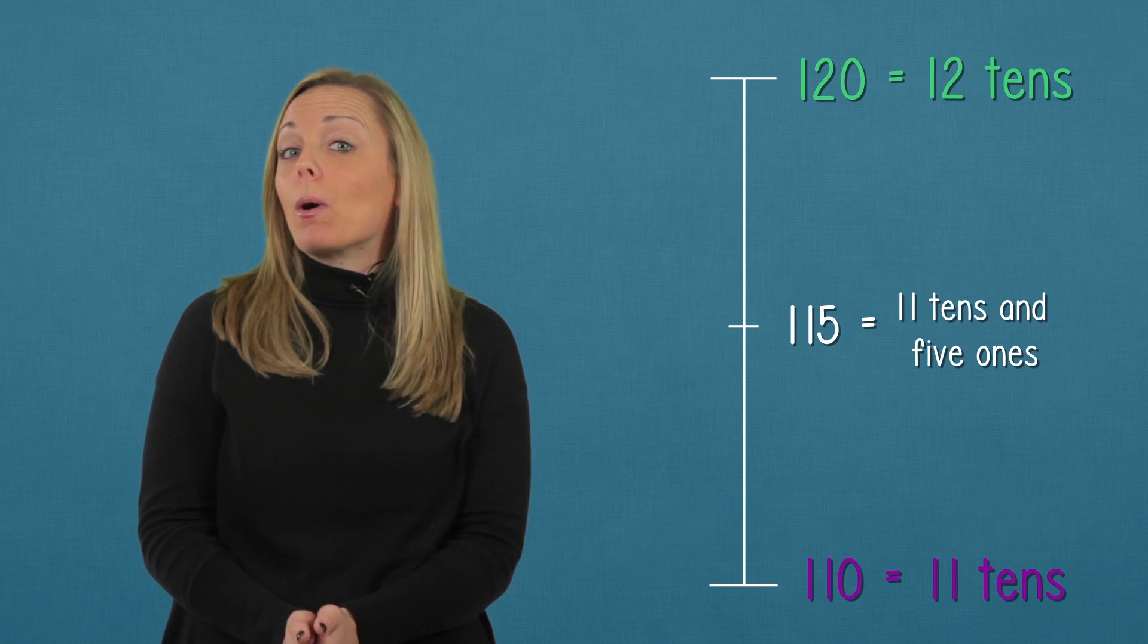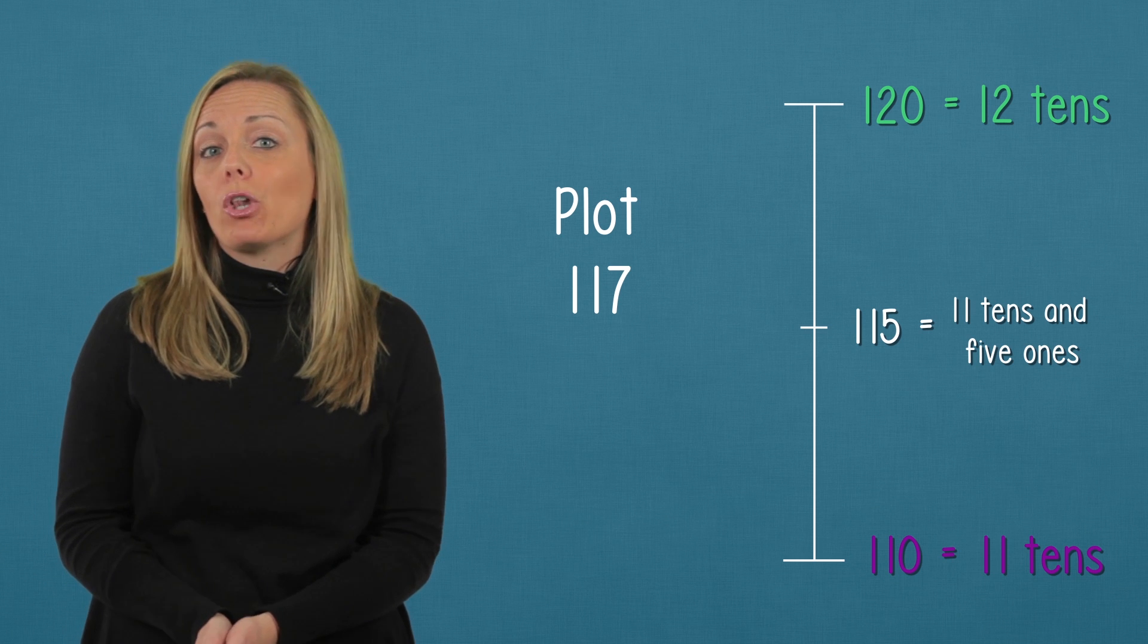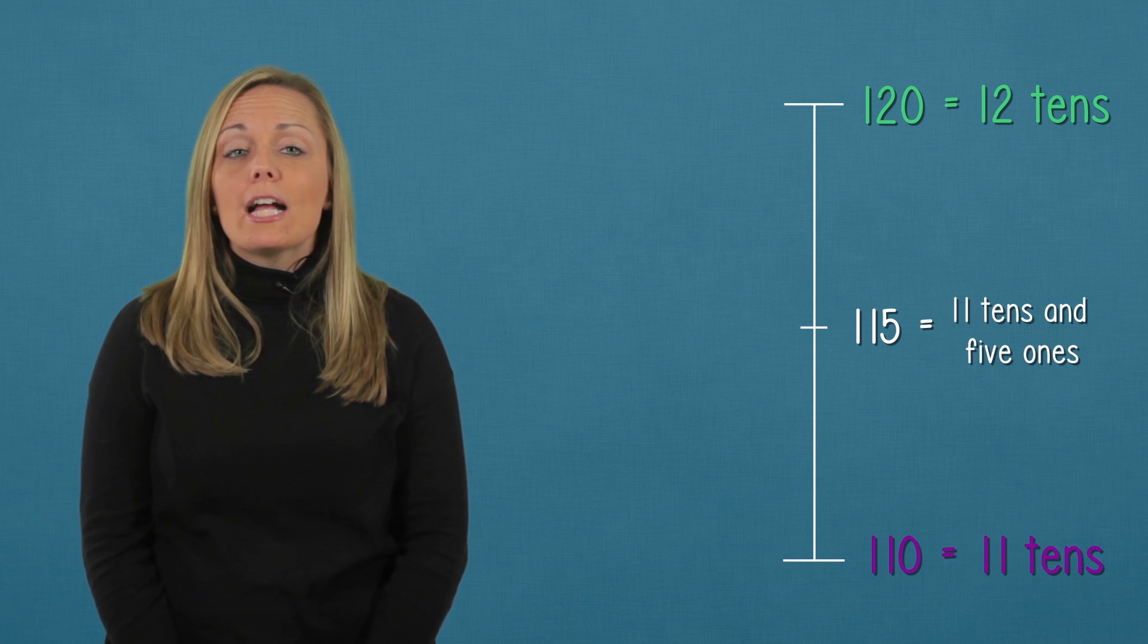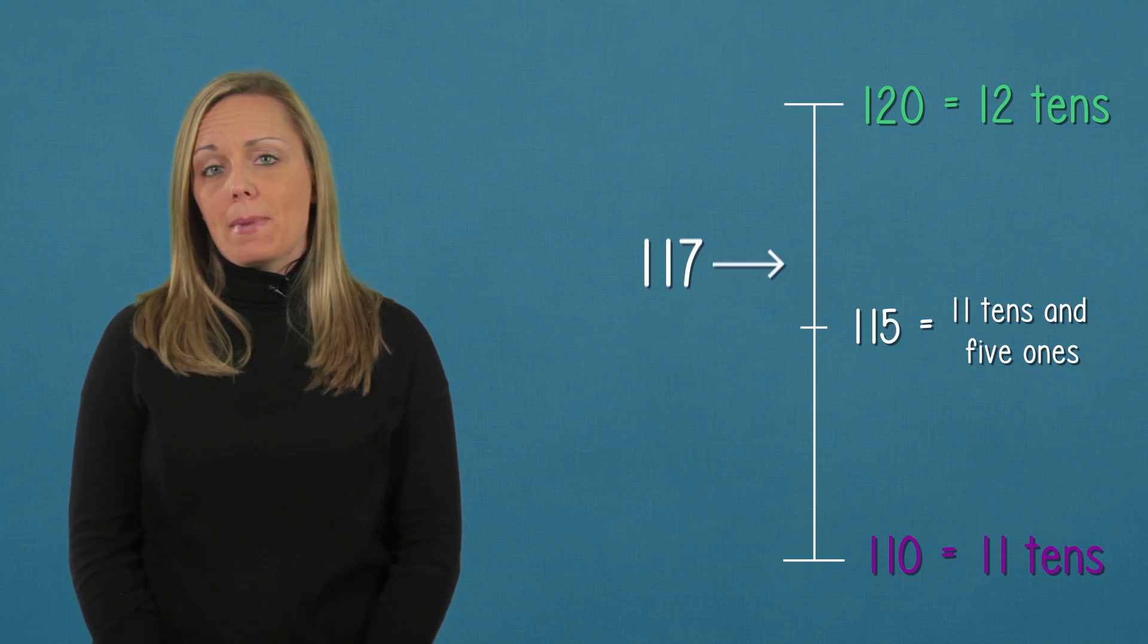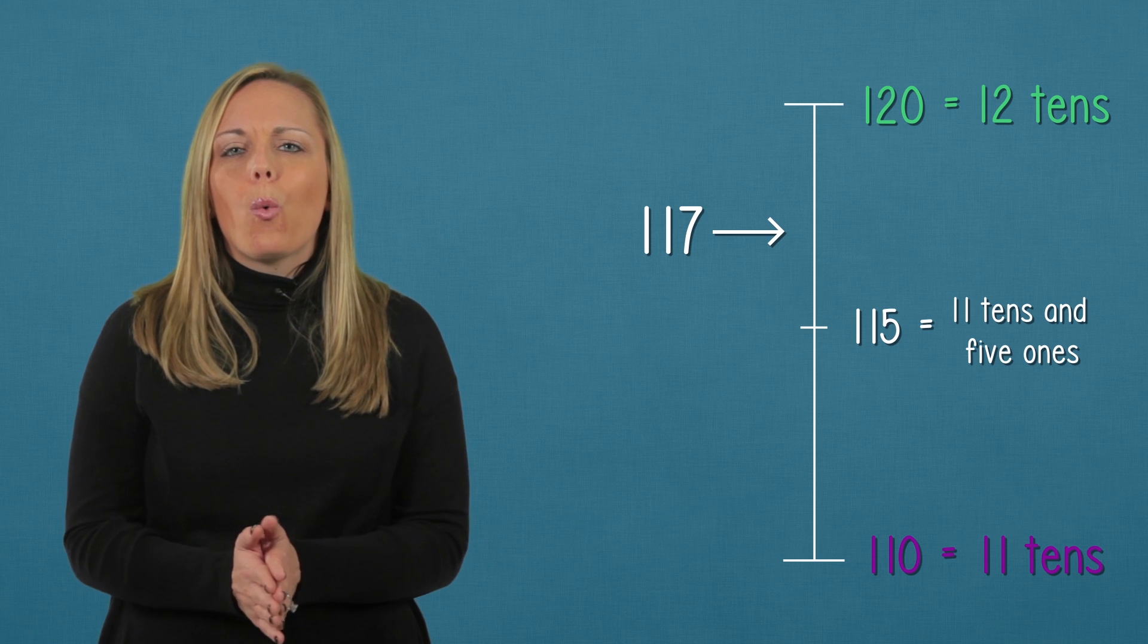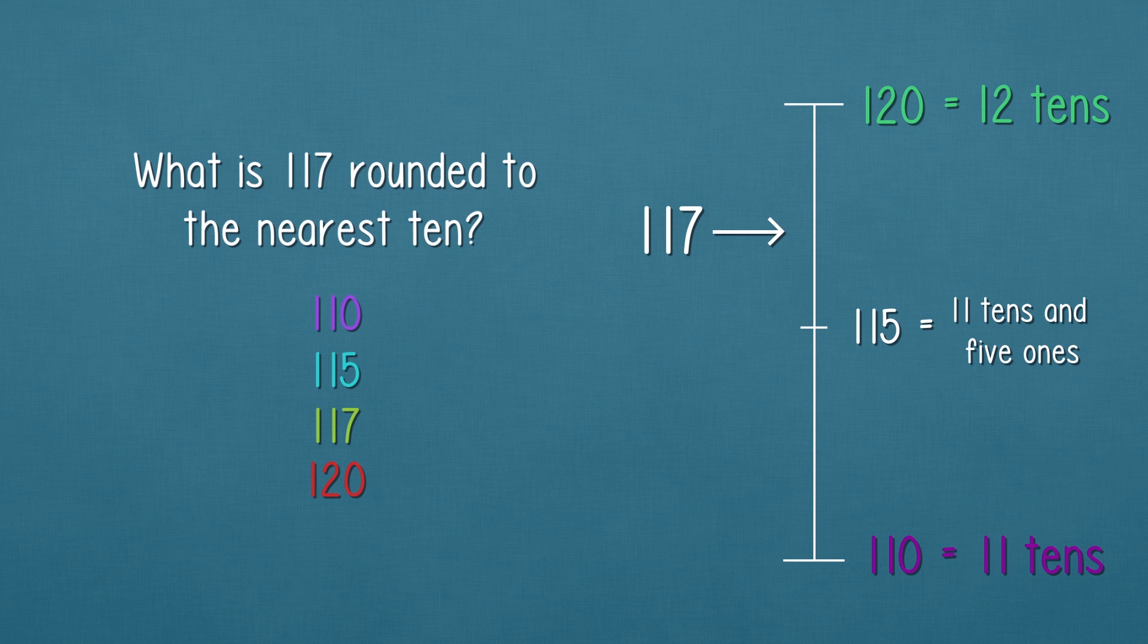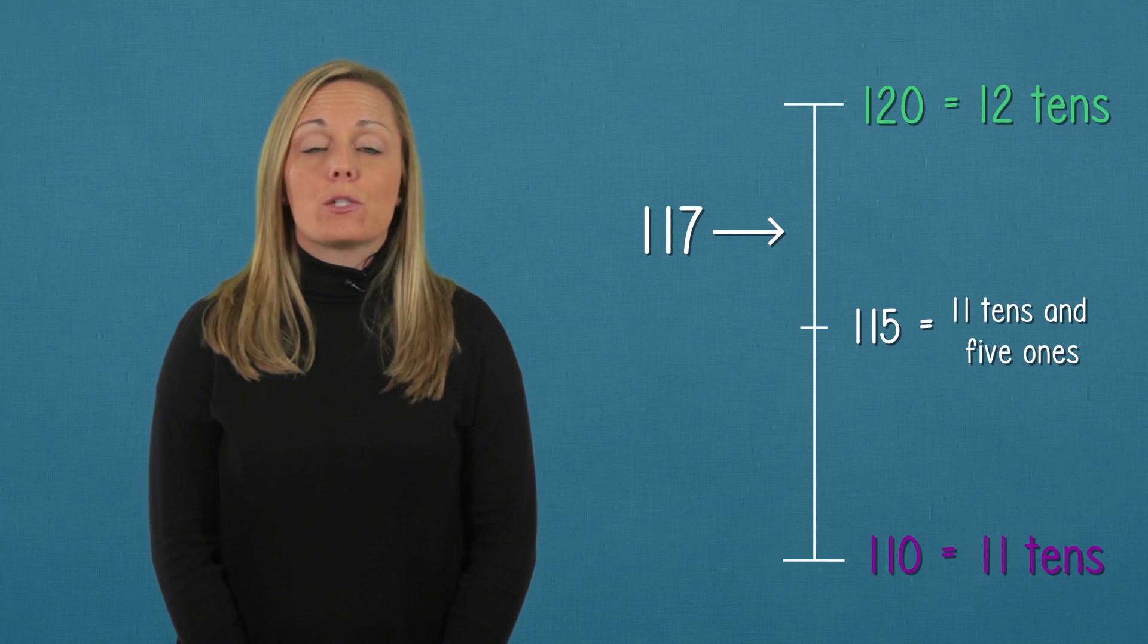Now we're ready to plot our point. Is one hundred seventeen above the midpoint or below the midpoint? One hundred seventeen is greater than one hundred fifteen, so that is above the midpoint. Now we've got it. What is one hundred seventeen rounded to the nearest ten? One hundred seventeen rounded to the nearest ten is one hundred twenty.